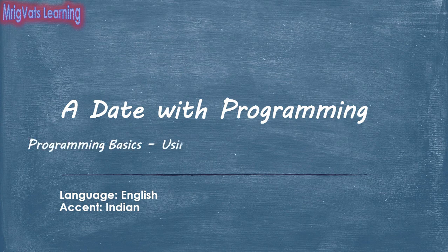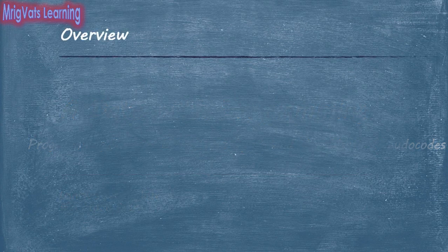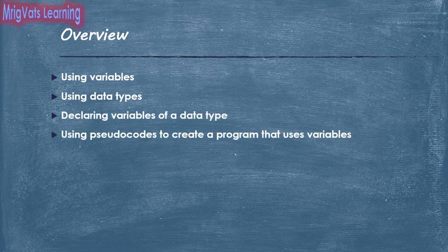Most of the programs that need user interactions work on data that changes occasionally to quite frequently. In this video, you will learn about using variables, using data types, declaring variables of a data type, and using pseudocodes to create a program that uses variables.